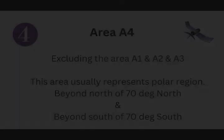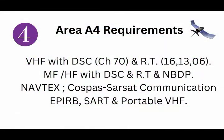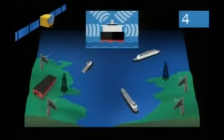Sea Area A4 is an area outside sea areas A1, A2, and A3 — which means the sea area north of 76 degrees North and south of 76 degrees South. Usually the polar regions are covered under area A4. The carriage requirements of ships in area A4 are: VHF with radio telephony, DSC and NBDP; MF/HF with radio telephony, DSC and NBDP; EPIRB, SART, and portable VHF; NAVTEX with EGC receiver.